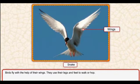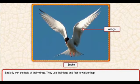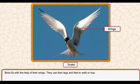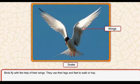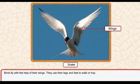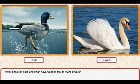Birds use their wings to move from place to place - pankhon ko istemal karte hain ek jaga se doosari jaga move karne ke liye. And they use their legs and feet to walk or hop - yeh apni taangon aur apne paaon ko istemal karte hain chalne ke liye ya phir hop karne ke liye. Hop mean uchhalna, ek jaga se doosari jaga uchhal kar jana.